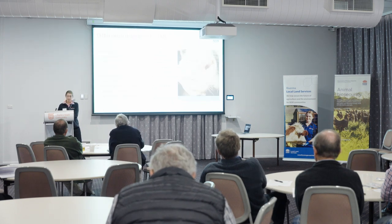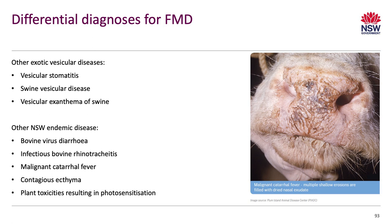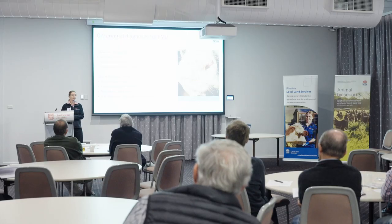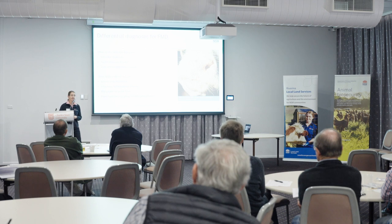There are lots of differential diagnoses for foot and mouth disease. For example, our district vet in Gundagai was called to a property near Tumut where there were vesicles in a couple of steers. She did an FMD exclusion as you would, and it turned out they were persistently infected — it was mucosal disease. Common things occur quite commonly, but if you do see something like that, please contact us and we can help you rule out FMD.